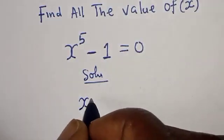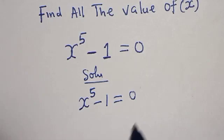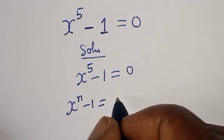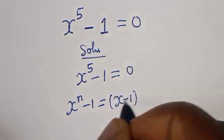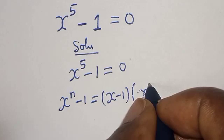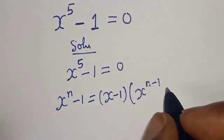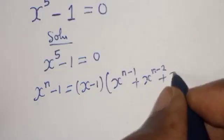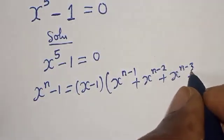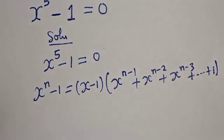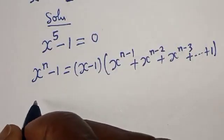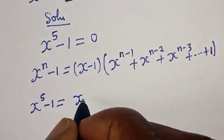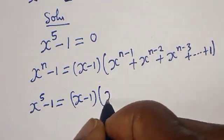We have the given equation x to the power 5 minus 1 is equal to 0. Now take note that if you have x raised to power n minus 1, this is equal to x minus 1, bracket x to the power n minus 1 plus x to the power n minus 2 plus x to the power n minus 3, plus ... plus 1.